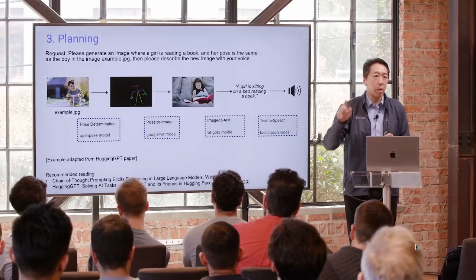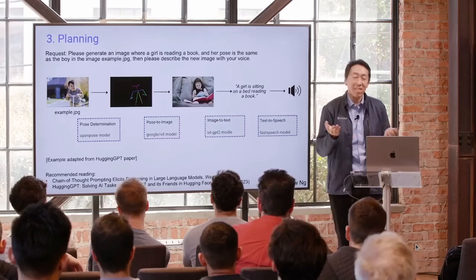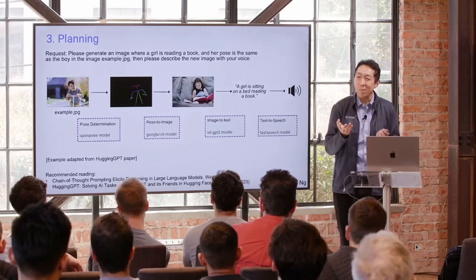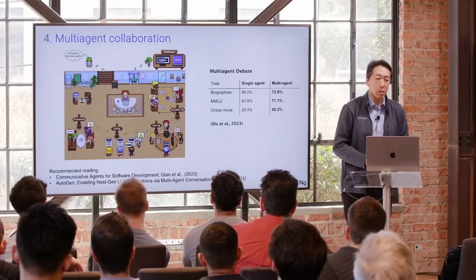With agentic workflows, you can sometimes recover from earlier failures as well. I find myself already using research agents for some of my work — when I want a piece of research but don't feel like Googling myself, I send it to the research agent, come back in a few minutes, and see what it's come up with. It sometimes works, sometimes it doesn't, but it's already part of my personal workflow.